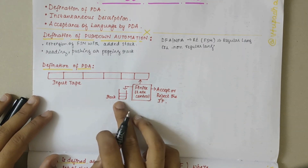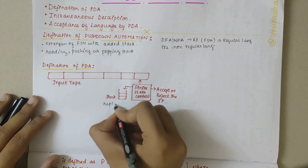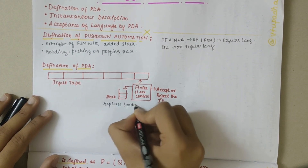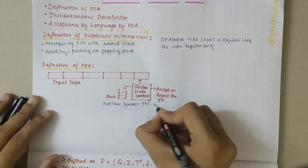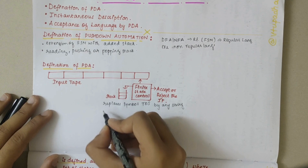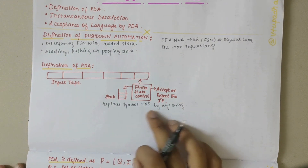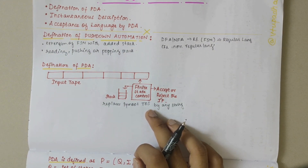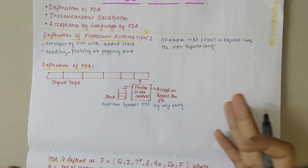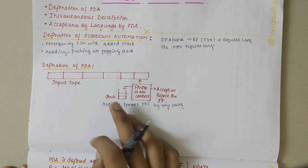The stack replaces the symbol on top of stack by any string. The string can also consist of epsilon, so if epsilon is there then nothing changes. The top of stack symbol can be replaced by two or more symbols, by the same symbol (which does not change the context of the stack), or by any other symbol.